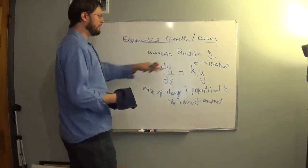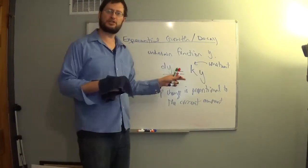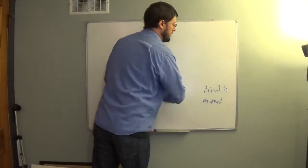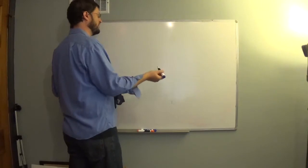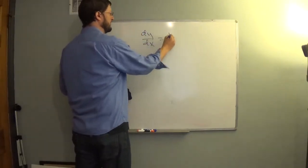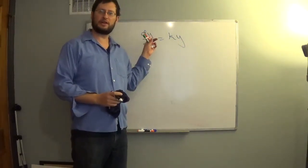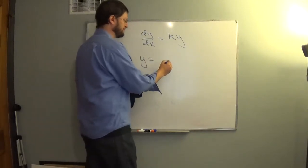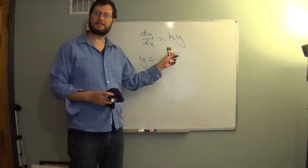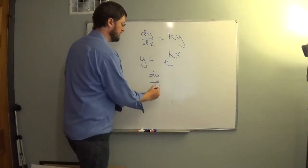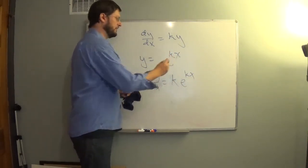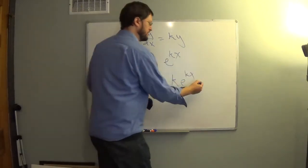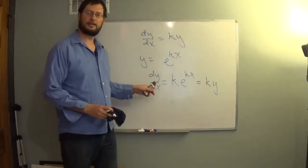We can notice something that actually works. If we have dy/dx equal to ky, and I want to find a function whose derivative is that original function, I'm going to point out what y could be. If y is equal to e to the kx, then the derivative of y is e to the kx times the derivative of the exponent. The derivative of the exponent is k, so I get k·e^(kx), but e^(kx) was our original function y, so I end up with ky. The derivative of y is a constant times y.